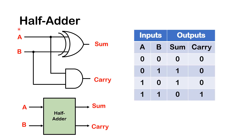Here is a schematic diagram of a half adder. Basically it consists of an exclusive OR or XOR gate and an AND gate. There are two inputs, input A and B, and the outputs are a sum and a carry. You can represent the half adder with a block diagram like this.